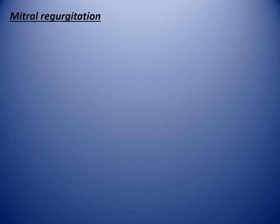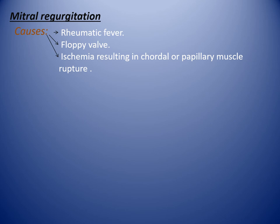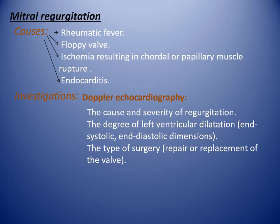Mitral regurgitation causes: rheumatic fever, floppy valve, ischemic — resulting in chordal or papillary muscle rupture — and endocarditis. Investigation: echocardiography to assess the cause and severity of the regurgitation, the degree of left ventricular dilatation in systolic and diastolic dimensions, and to determine the type of surgery — repair or replacement of the valve.